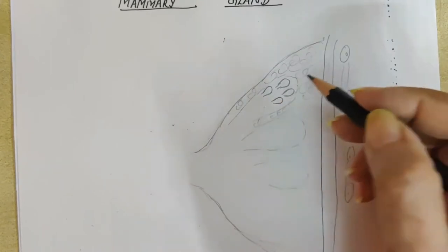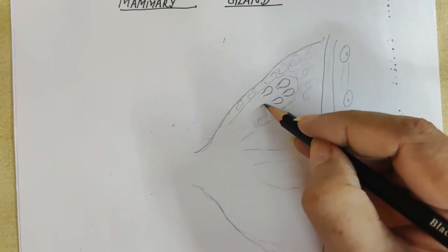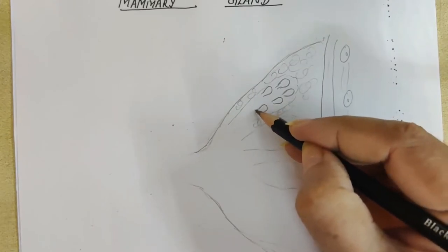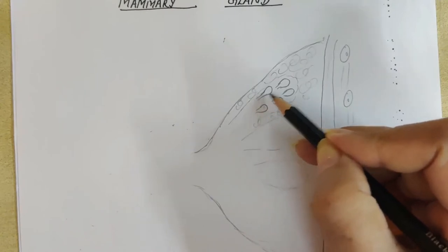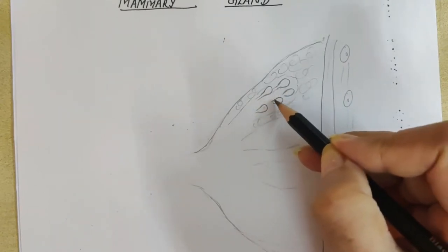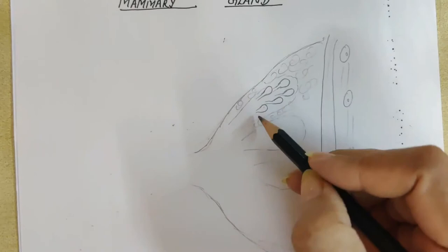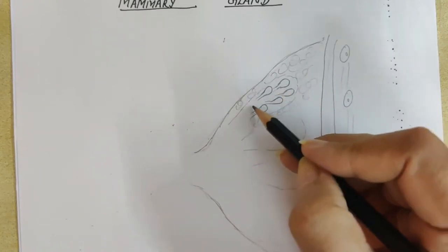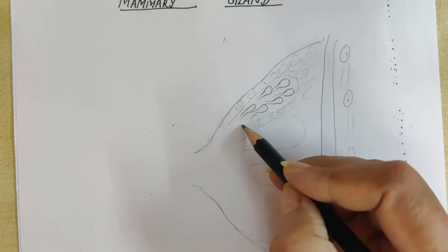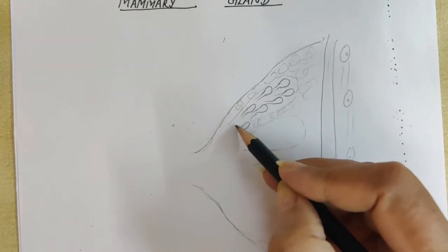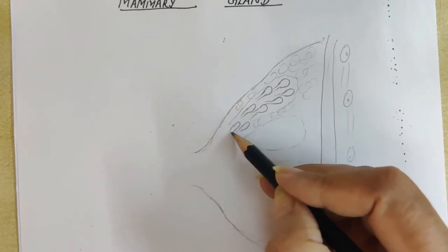mammary alveoli. Alveolus is singular and alveoli is plural. Each of these alveolus will have their own mammary tubule. Just show the tubules. Now from one lobe, all the tubules will be pouring the secretion